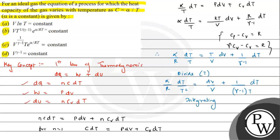Integrating both sides: on the left, integrating (α/R)·T^(-2) dT gives (α/R)·(-1/T), which equals -α/(RT). On the right, integrating dV/V gives ln(V), and integrating (1/(γ-1))·(dT/T) gives (1/(γ-1))·ln(T). So we have -α/(RT) = ln(V) + (1/(γ-1))·ln(T).